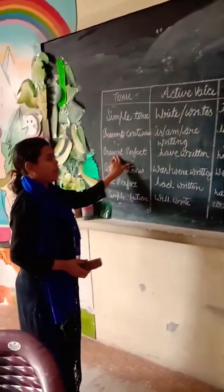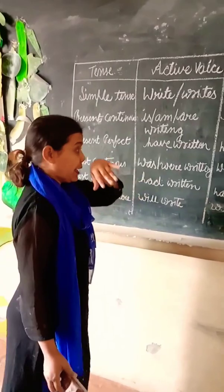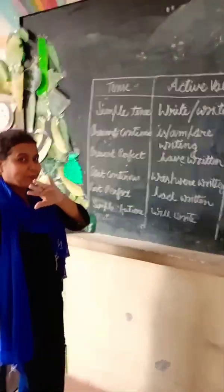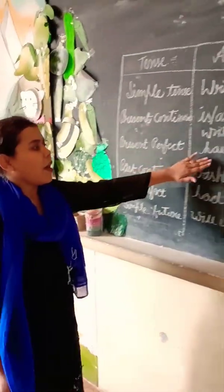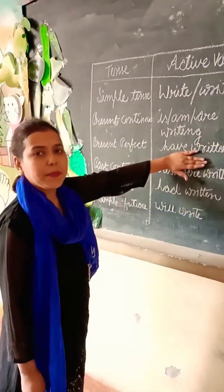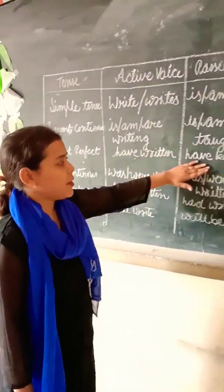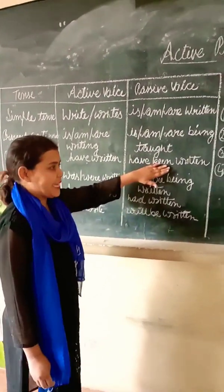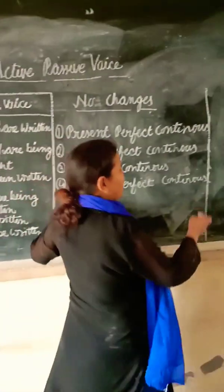Now, in present perfect tense, 'have' or 'has' will be there, and with it, the verb third form automatically. While converting to passive, we will use 'have/has' + 'been' + verb third form.